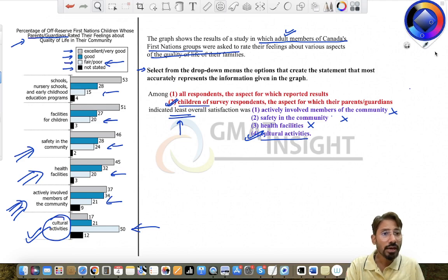And if you combine these, you will have a very good sentence form. For example, among children of survey respondents, the aspect for which their parents or guardians indicated least overall satisfaction was cultural activities. That's how you get the answer.